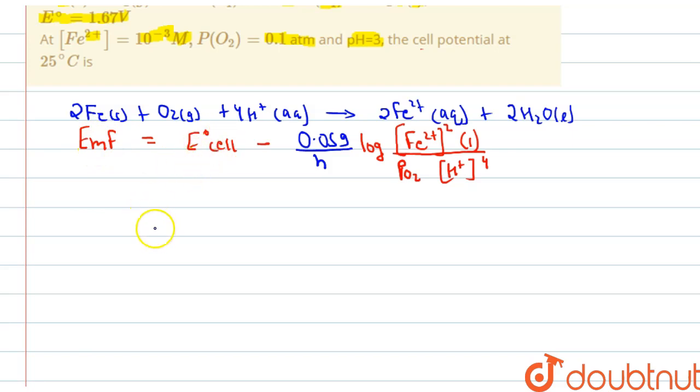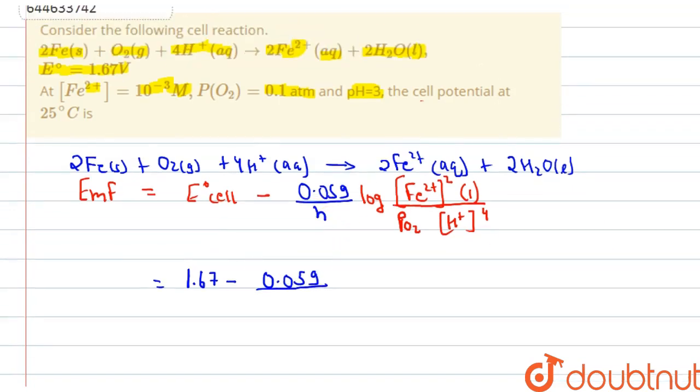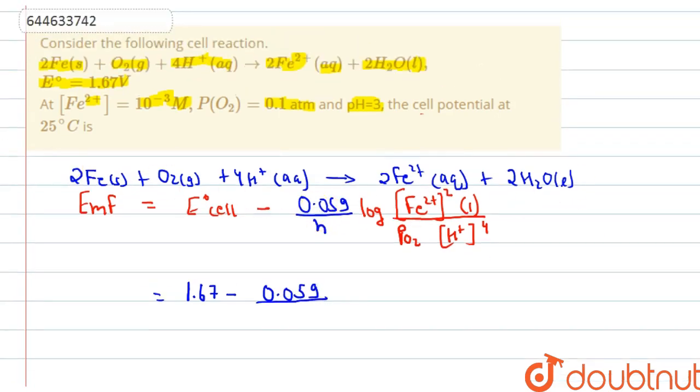Now E0 cell is given to us. E0 cell is 1.67 volt minus 0.059 divided by N. N is the number of electrons which are taking part in this reaction. So here ferrous is in 0, here this is plus 2.